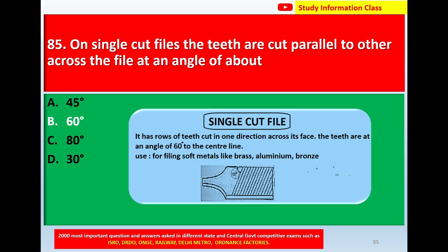A single cut file has rows of teeth cut in one direction across its face. The teeth are at an angle of 60 degrees. So for question 85, the correct answer is option B: 60 degrees.